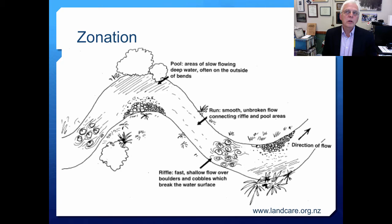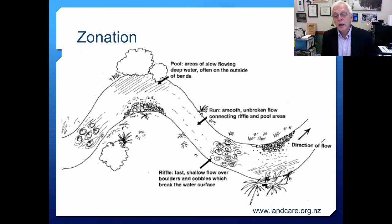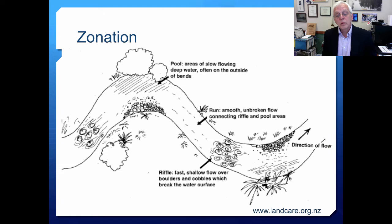The stream zonation theory suggests that there are areas systematically within streams and rivers of slow-flowing deep water, often on the outside of bends — these are pools — alternating with runs, which are smooth unbroken flow connecting riffle and pool areas, and then riffles, which are fast shallow flow over boulders and cobbles that break the water surface. All of these have an effect on what can live there.